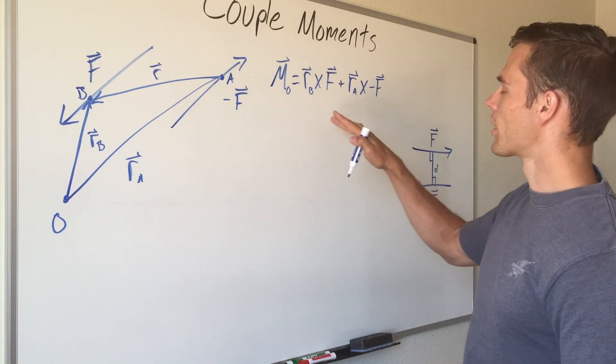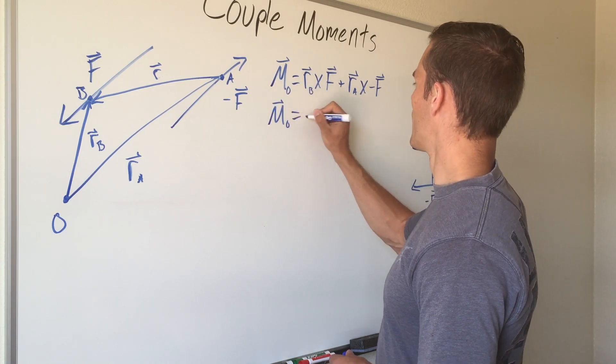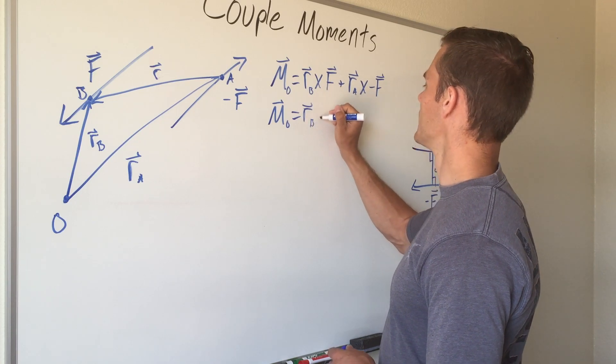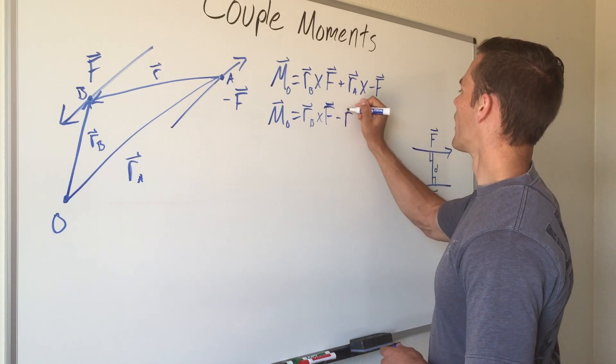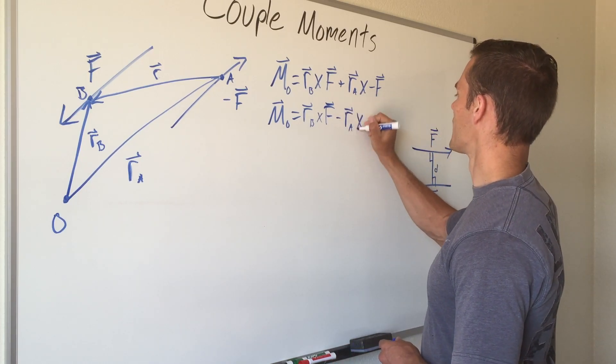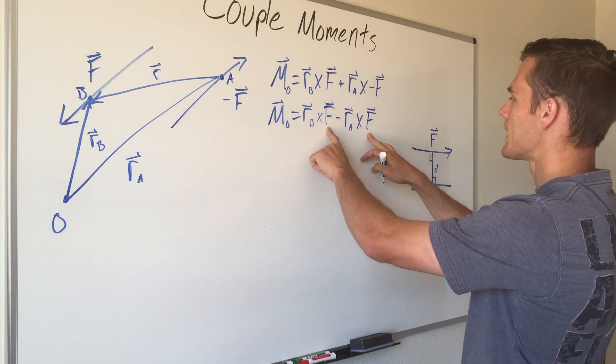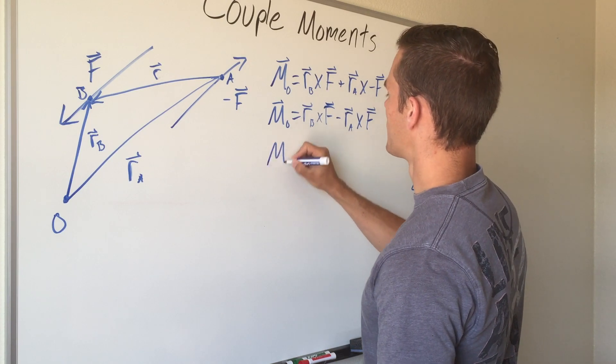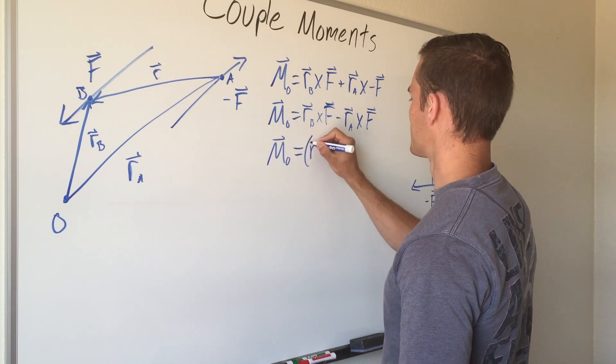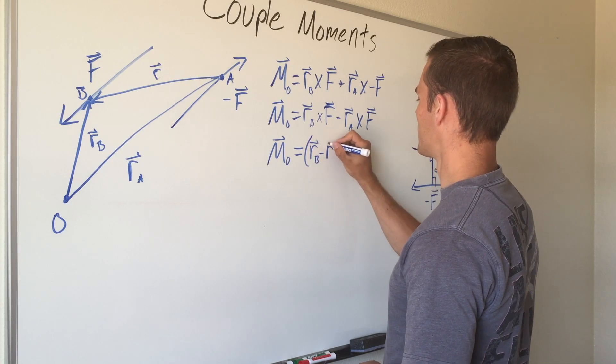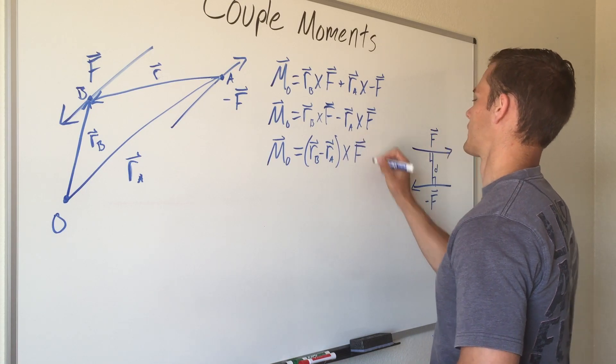If we use the properties we can rewrite that as our moment about point O equals r sub B cross F minus r sub A cross F. Now we have our two forces that are the same. We can use another property of the cross product to rewrite that as r sub B minus r sub A cross our force vector F.